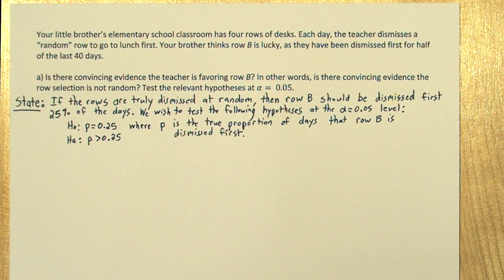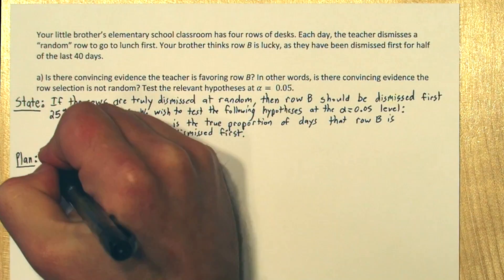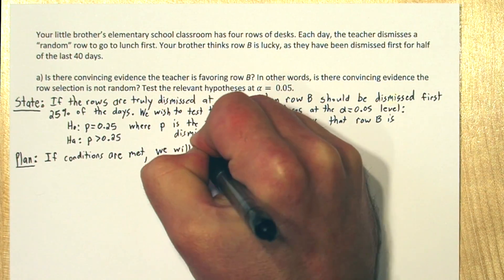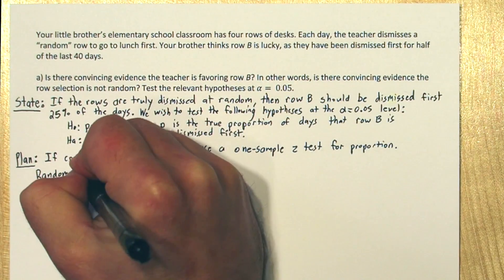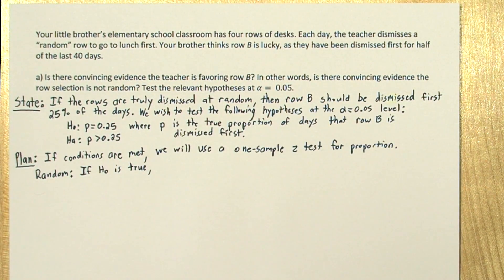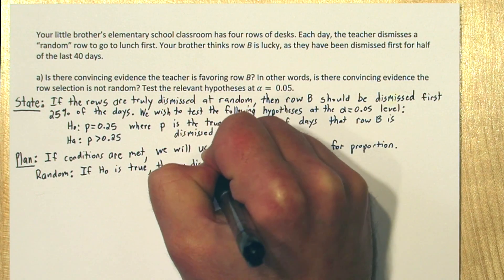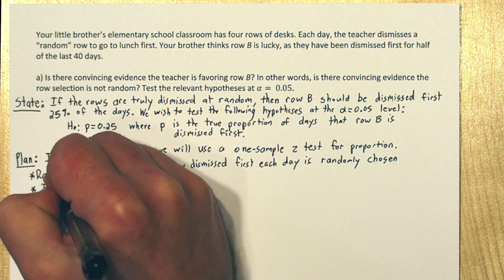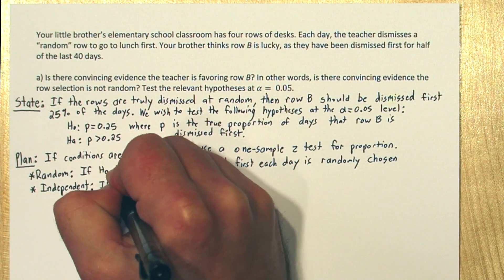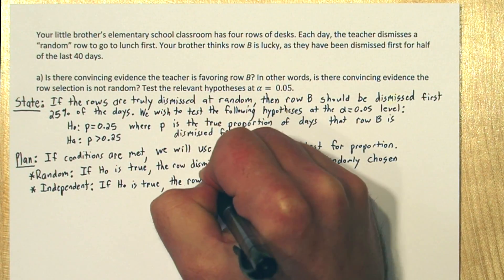In the plan step, we need our inference method and to check conditions. So if conditions are met, we will use a one-sample z-test for proportion. So the random condition: if the null hypothesis is true, then the row dismissed first each day is randomly chosen. For independent, if the null hypothesis is true, the row chosen each day has no effect on the other days.